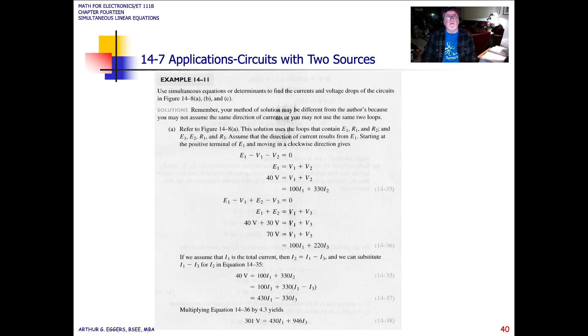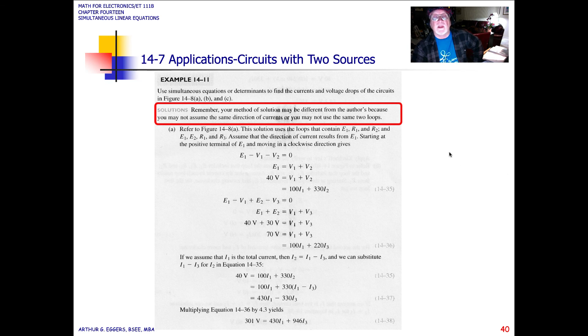You probably would be best to go through and solve these using those different methods, more so the determinants, so that you get used to the methodology. The solution says, remember, your method of solution may be different from that of the author because you may not assume the direction of the currents, or you may use the same loop currents. So that's something that you always have to be aware of when you are working examples that somebody else has done. You want to make sure you understand how they selected their polarity and their current flow because you could end up with differences that are yielded because you chose a different direction for the currents.